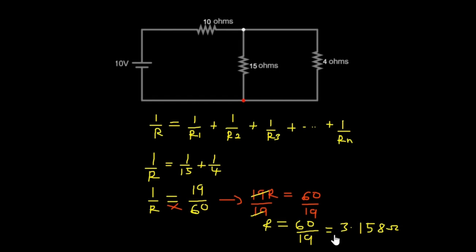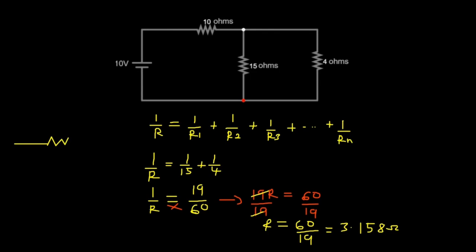So 3.158 ohms is the effective resistance for the resistors in the parallel connection — that's the 15 ohms and the 4 ohms. After finding this, let's see how the circuit will now look. The circuit will become something like this — I'll draw the simplified circuit.